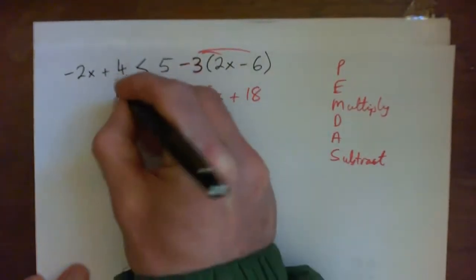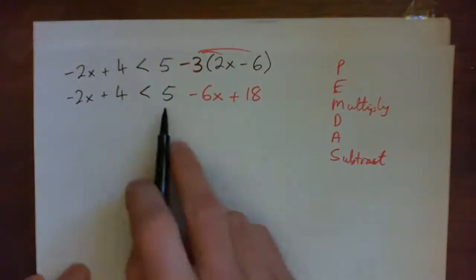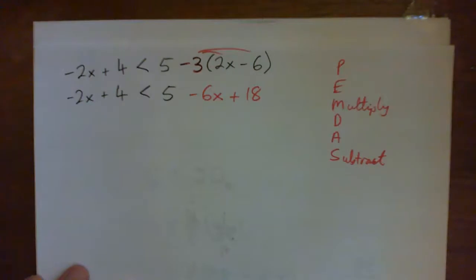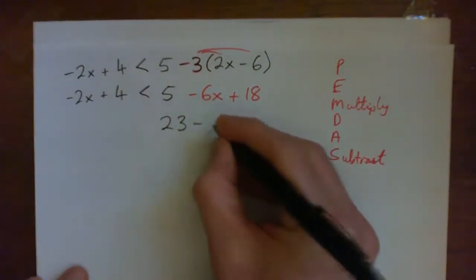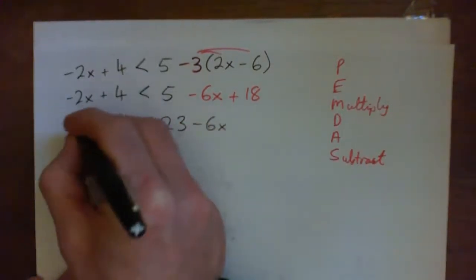So now on the right, I think I can add like terms. I've got a 5 and an 18, right? So that's going to give me a 23. So I've got 23 minus 6x. Got that. All right.